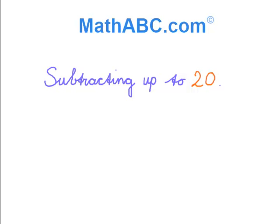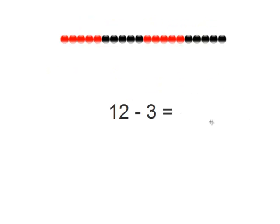Subtracting up to 20. We see here the problem 12 minus 3 equals something. And above that we see the string of beads. And if you remember correctly, it's always 5 red beads, 5 black beads, 5 red beads, and 5 black beads, which equals 20 beads in total. So let's take a look again at this problem.